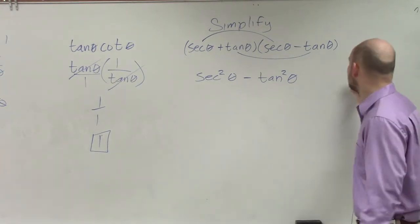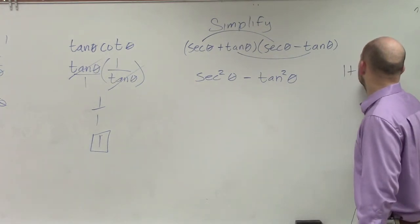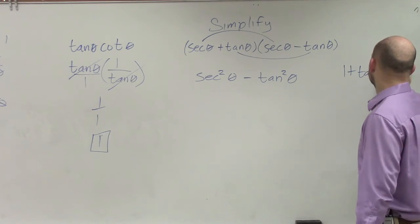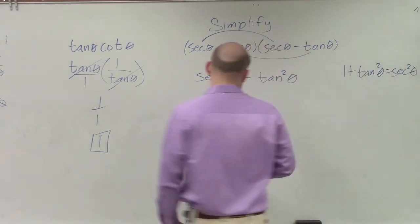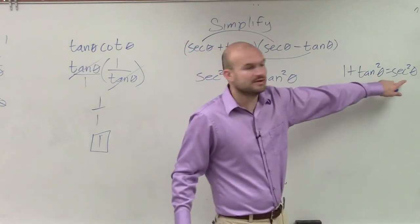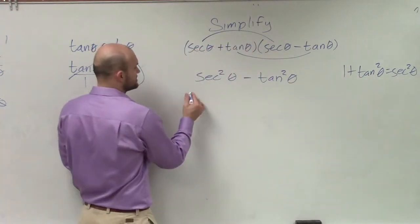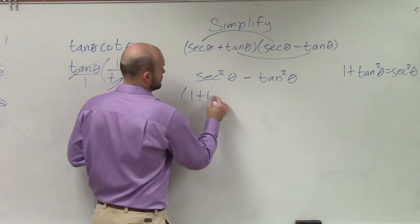So we go back to Pythagorean identities, and I know that 1 plus tangent squared of theta equals secant squared of theta. Well, why don't I rewrite secant squared for 1 plus tangent squared?